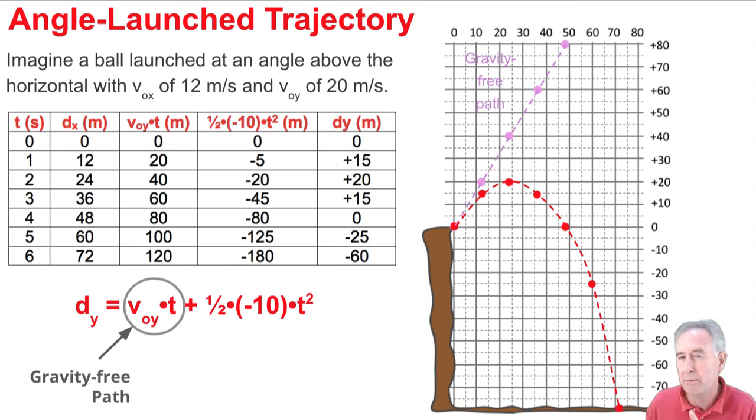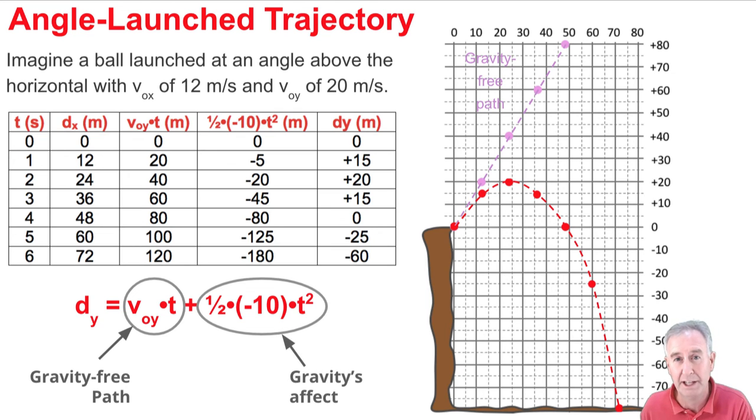Now, the distance between the pink or magenta dots and the red dots is simply the 5, the 20, the 45, the 80, etc. And we see that here on the diagram. Now that's geeky cool.